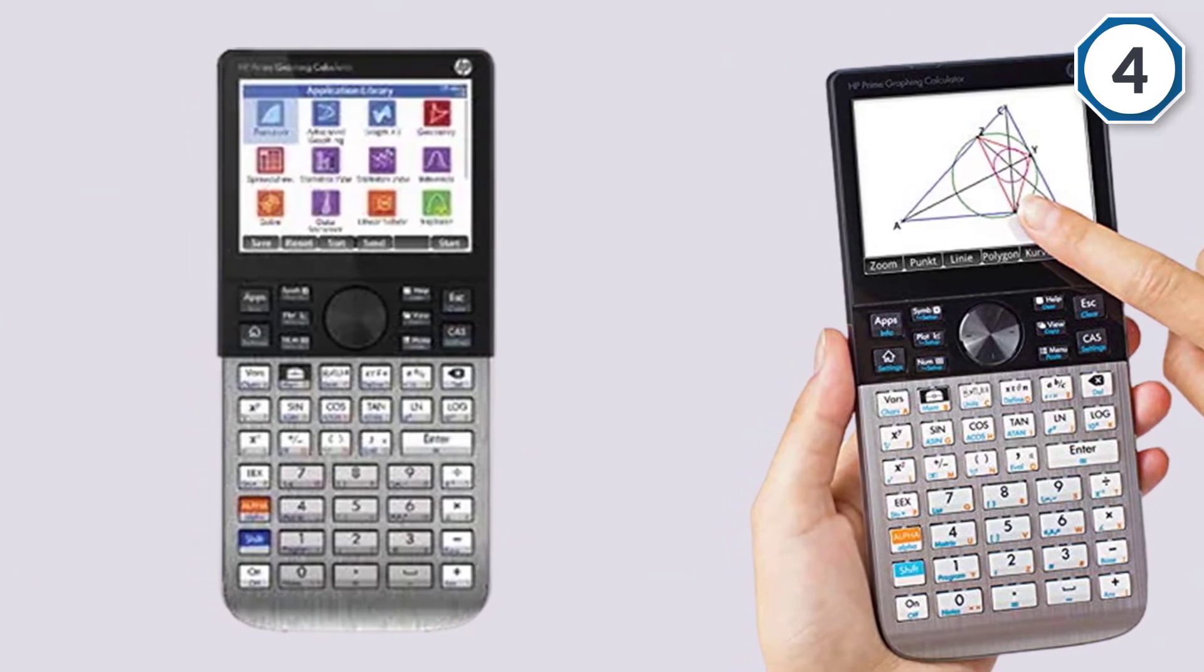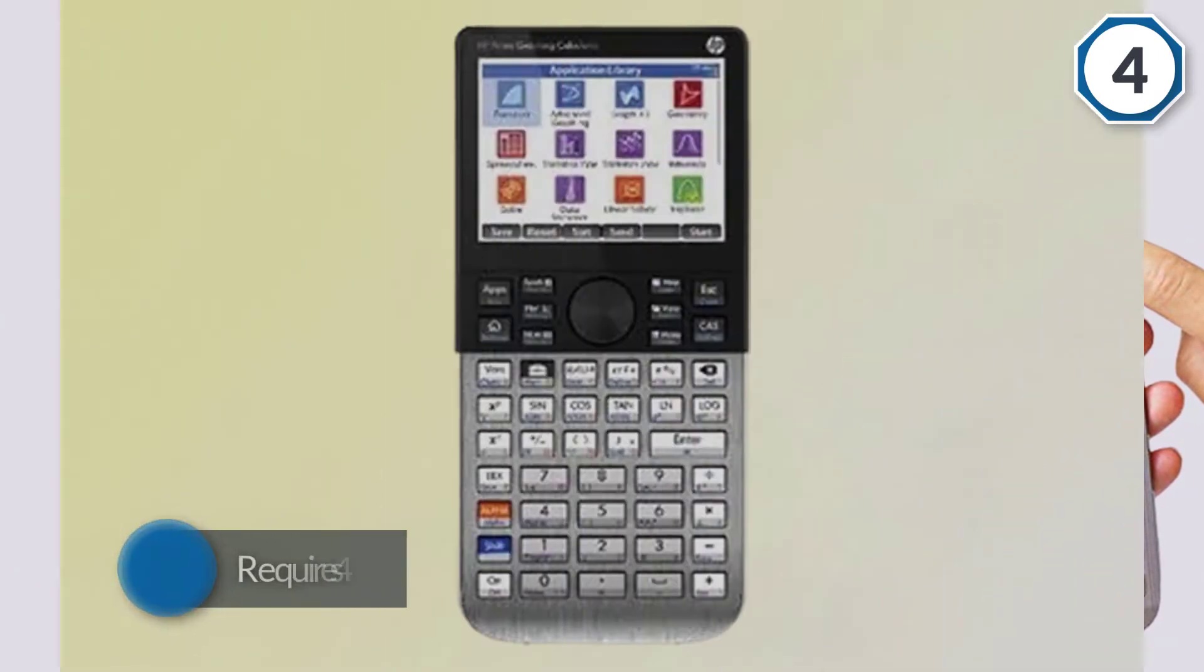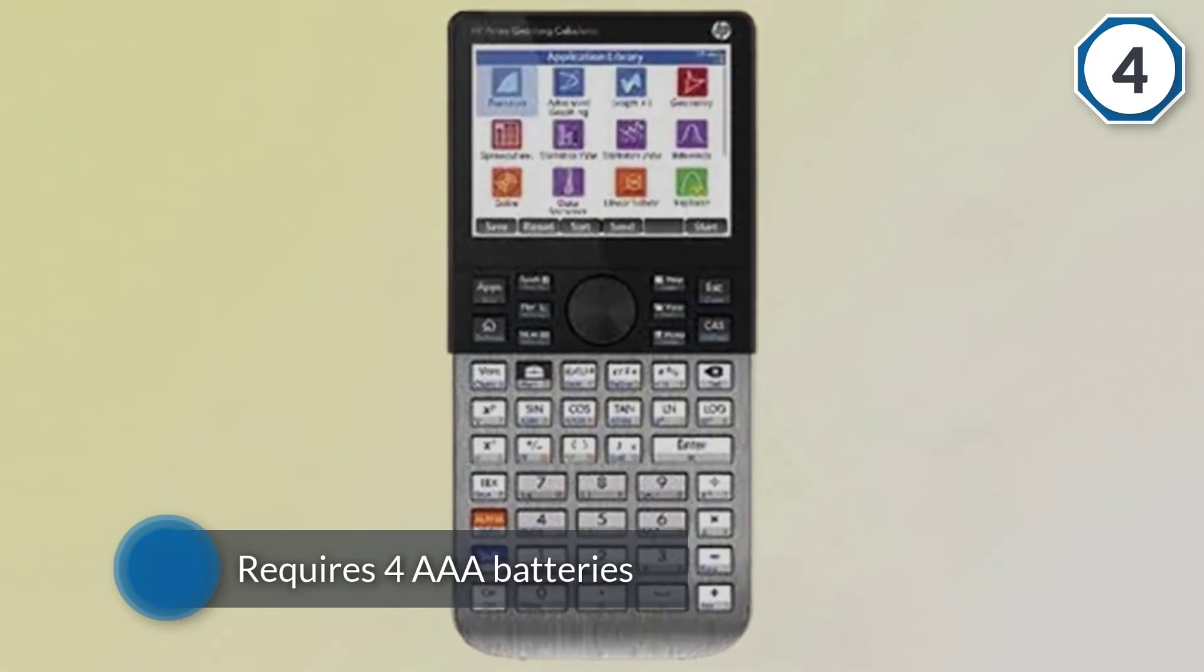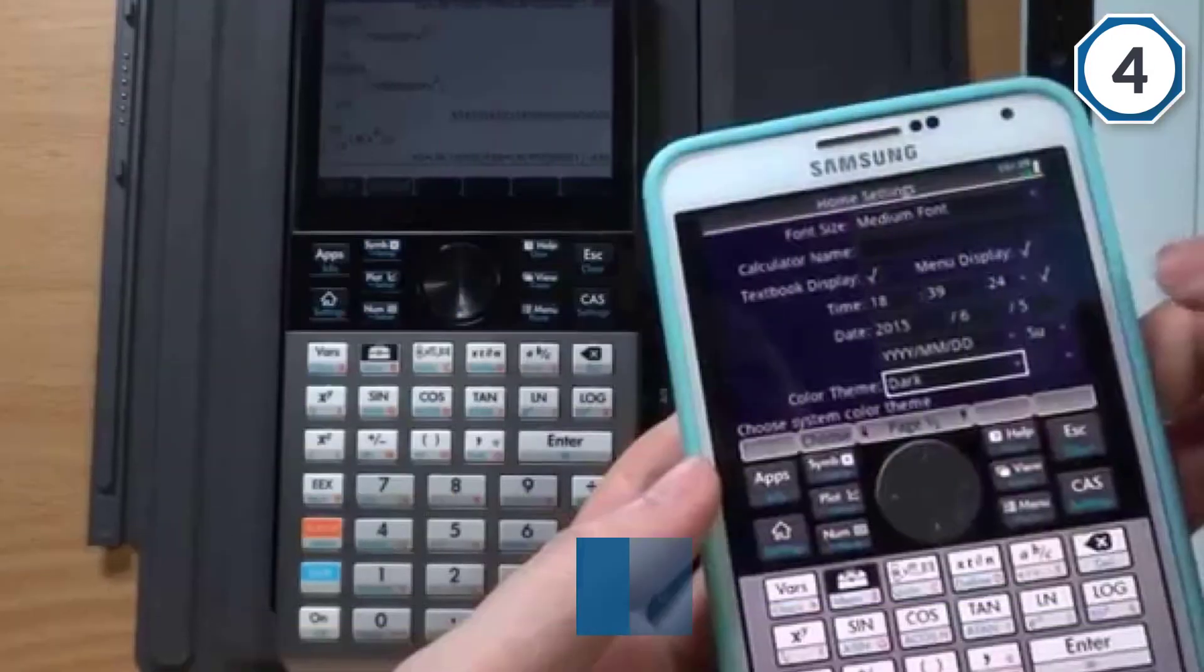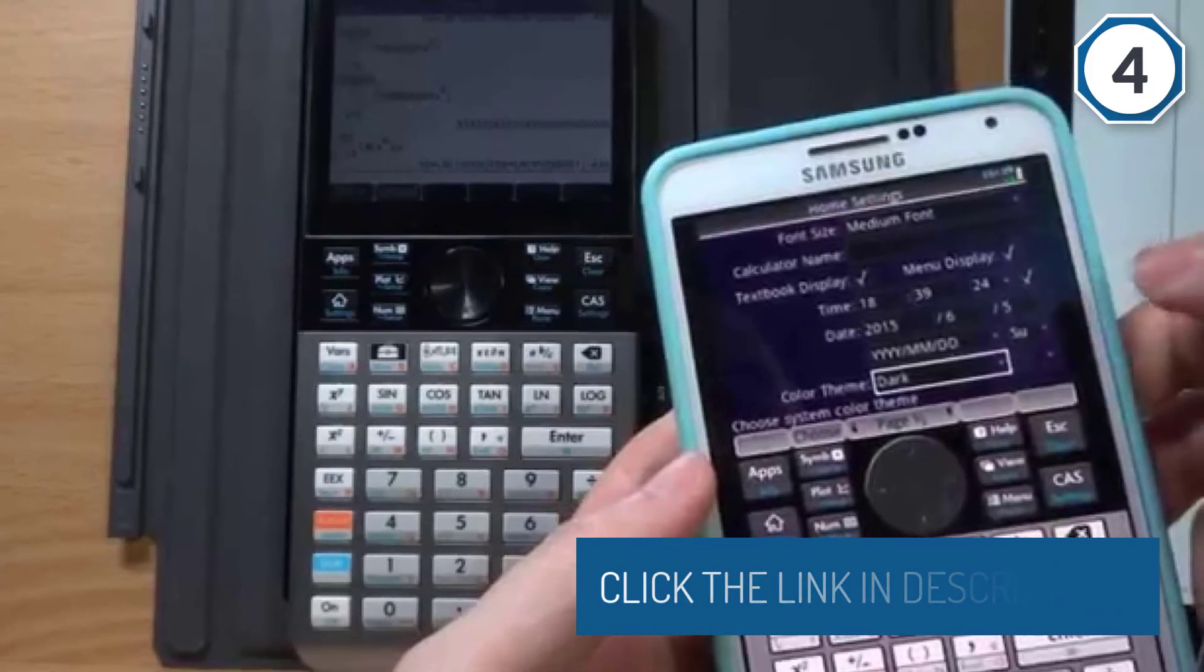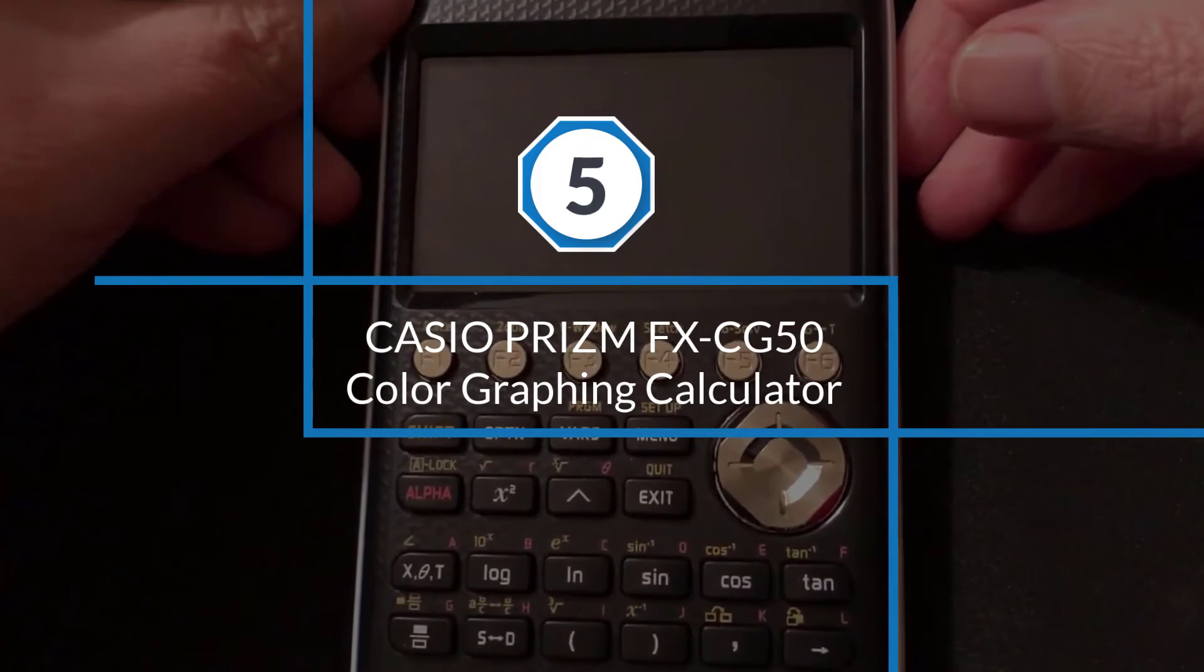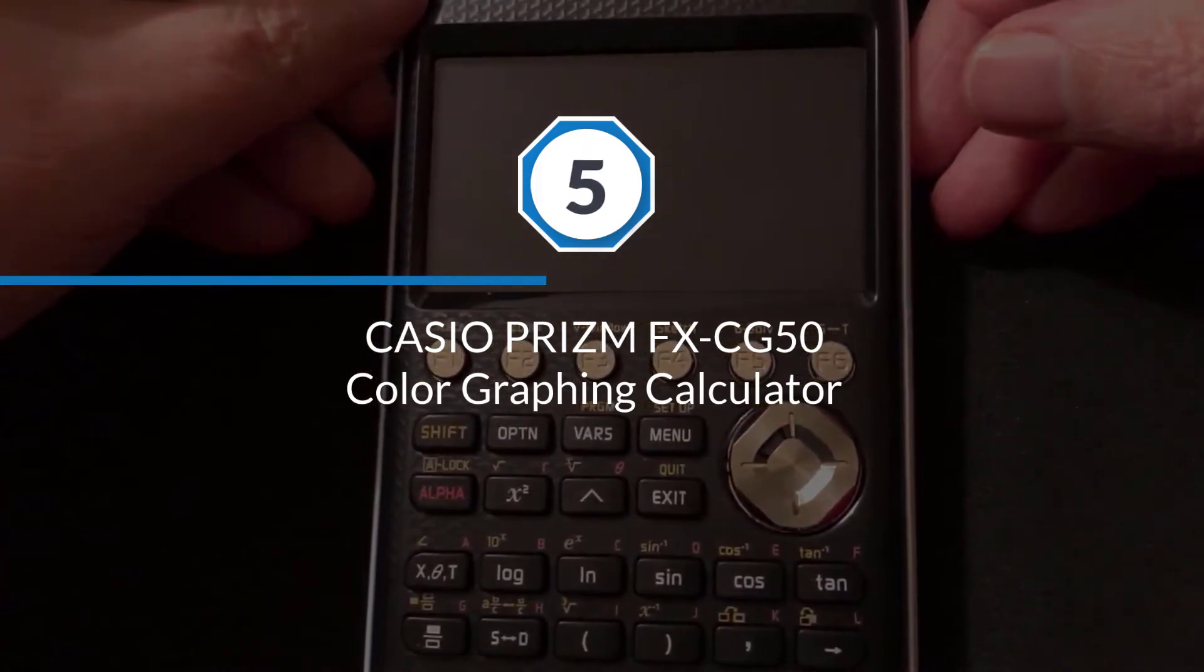This requires four AAA batteries. Number five: Casio Prism FX-CG 50 Color Graphing Calculator.